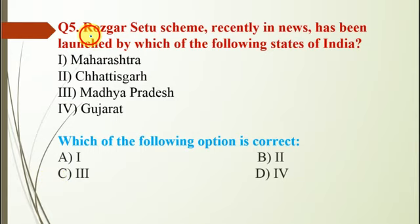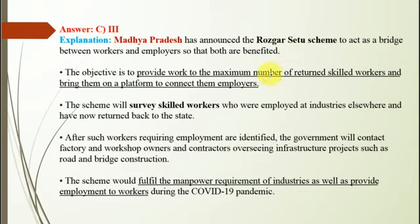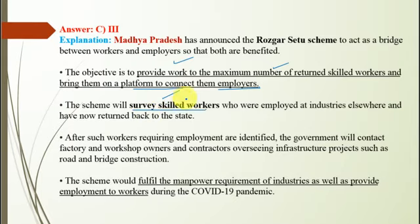Question number 5: The Roskart Setu scheme, recently in the news, was launched by which state of India? The correct option is C — Madhya Pradesh. The Roskart Setu scheme acts as a bridge between workers and employers, with the objective of providing work to the maximum number of returned skilled workers and connecting them to employers on a single platform. The scheme surveys skilled workers who were employed in industries elsewhere and have now returned to the state.